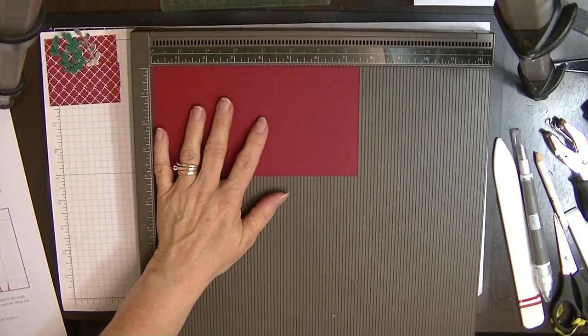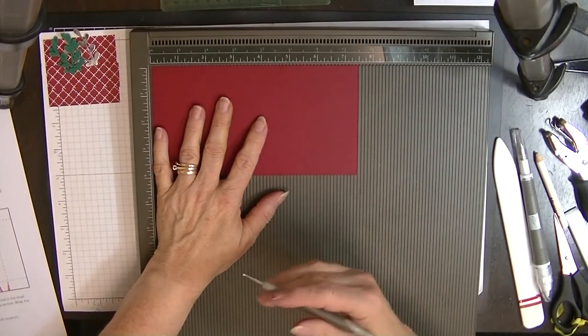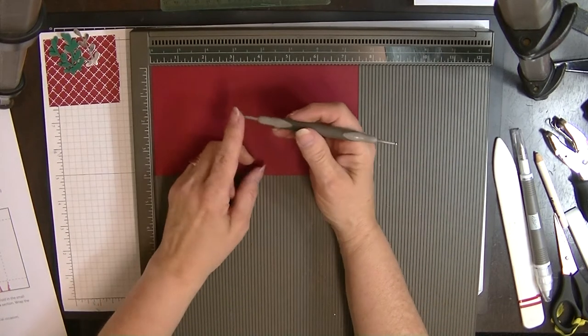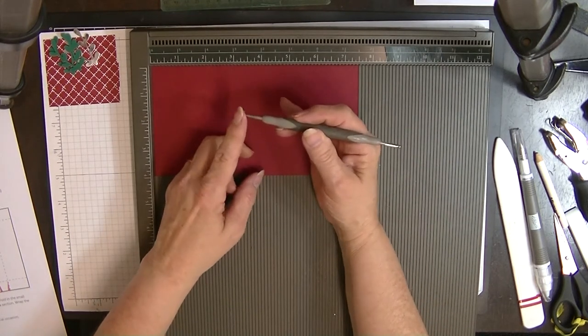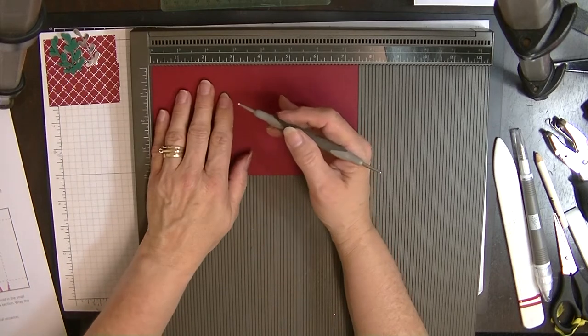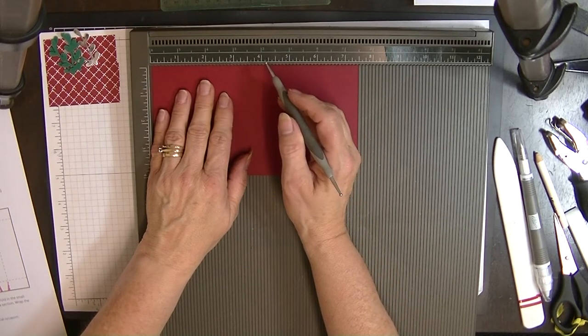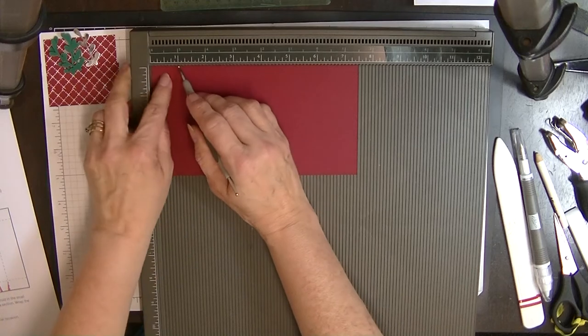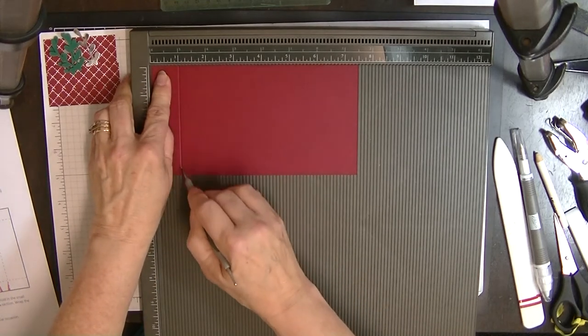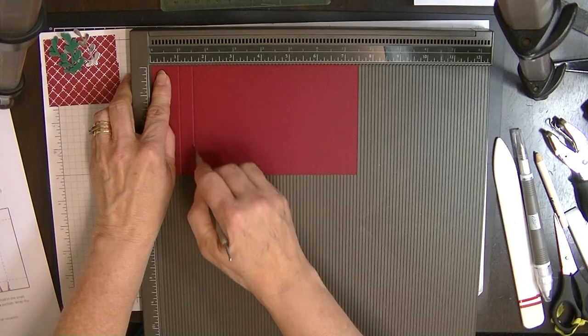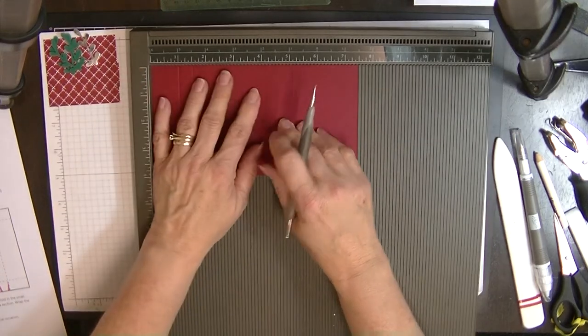So on the long side we're going to score this, making sure you've got your stylus up the right way, short end, the smallest end for card stock. And we're going to score this at one inch, one and a half inches, and four and a half inches.